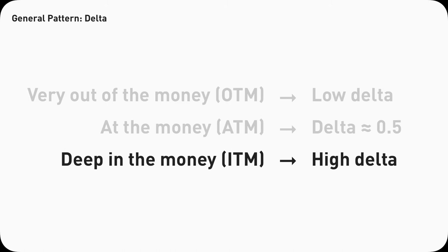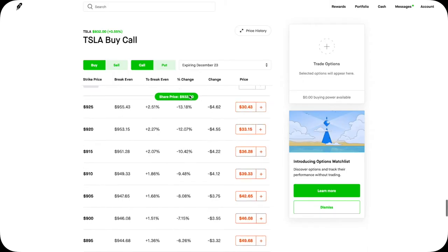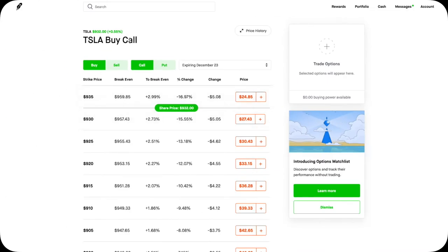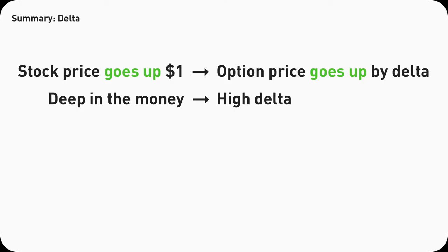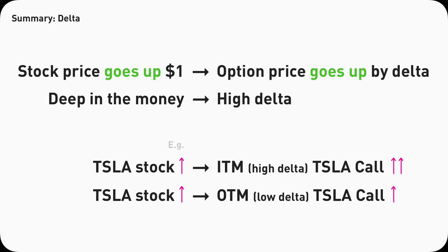So in this example, the 930 Tesla call has a Delta of 0.53. If Tesla stock goes from $932 to $933, just a $1 increase, then the price of this call option contract will go from $2,743 to $2,796 — adding $53 because we round the Delta and multiply by 100. Some general patterns for Delta: the deeper the option is in the money, the higher the Delta will be. The 930 call is in the money with a Delta of 0.53. If you go even deeper, an $800 Tesla call has a Delta of 0.99. An option contract with high Delta means there will be a bigger change for every dollar its underlying stock increases. Delta is the first thing I look at when buying a call.